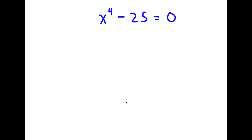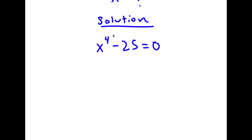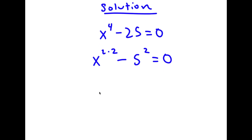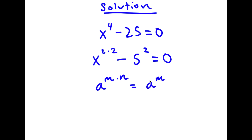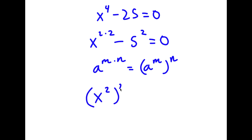In this problem, I have x to the power of 4 minus 25 is equal to 0. I'm going to find the value of x here. I first rewrite x to the power of 4 as x to the power of 2 times 2, and rewrite 25 as 5 squared. Using the rule that a to the power of m times n equals a to the power of m to the power of n, I can rewrite x^(2×2) as (x²)². So I have (x²)² minus 5² equals 0.